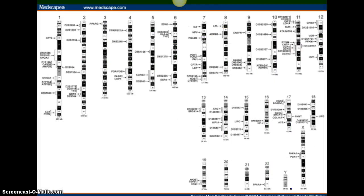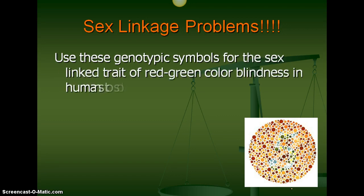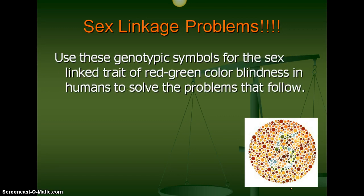These are some of our chromosomes and what is there. We have a map of this in the classroom you can look at as well. Now let's practice a sex linkage problem. Use these genotypic symbols for the sex-linked traits of red-green color blindness in humans to solve the problems that follow. That picture at the bottom right is something they might use to see if you are color blind — you should be able to see a number five in there. If you can't see that, there's a chance you might be color blind.